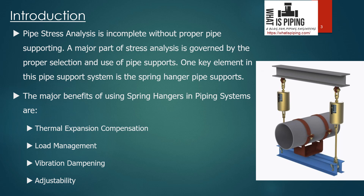Pipe stress analysis is incomplete without proper pipe supporting. Proper supporting of the piping system is a major part of stress analysis. Most of the time, by doing proper supporting and proper support selection on the existing piping system, we can easily qualify systems — routing changes and other considerations are normally not required if we use proper types of supports. One key element in this pipe support system is the spring hanger pipe support.